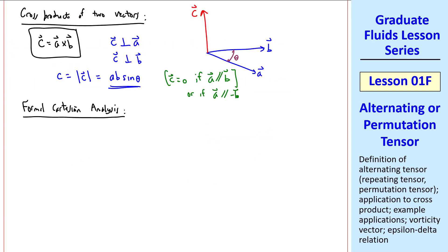Let's examine this cross product using formal Cartesian analysis. We write A cross B equal A_i E_i crossed with B_j E_j, where the E's are unit vectors. We could move this B_j outside of the cross product, since these components like A_i and B_j aren't affected by the cross product. So this is equal to A_i B_j times E_i cross E_j.